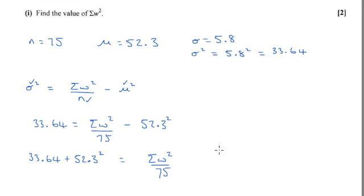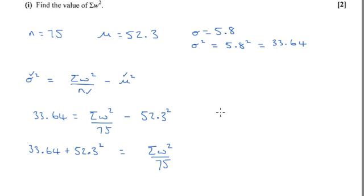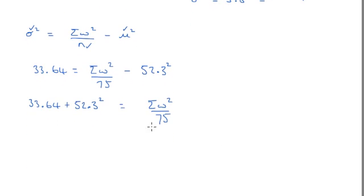We can then times that. I'm going to do this all in one go just to save me having to type loads of stuff into the calculator. We can then times this by 75. And that will give us Σw squared. So, 75 times by 33.64 plus 52... Oh, I've written that slightly wrong. Sorry.